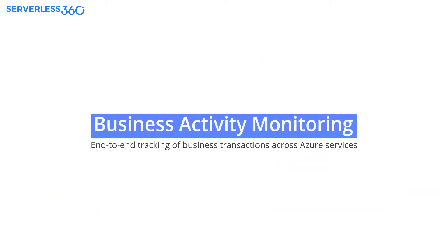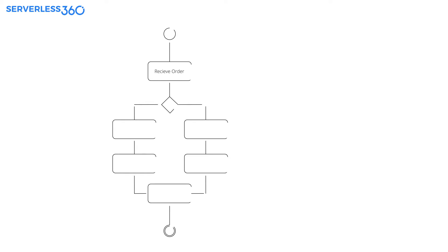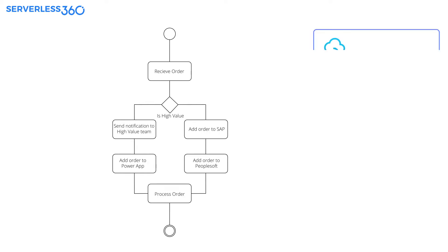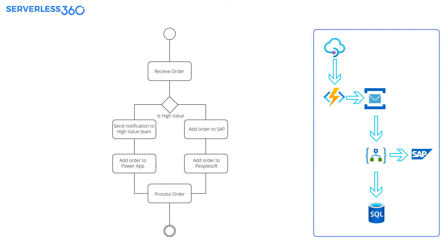Serverless 360 has built the Business Activity Monitoring Solution, or BAM for short, to address these challenges. Using BAM, you can map every stage in the business process against the component that is part of its execution in the business application.